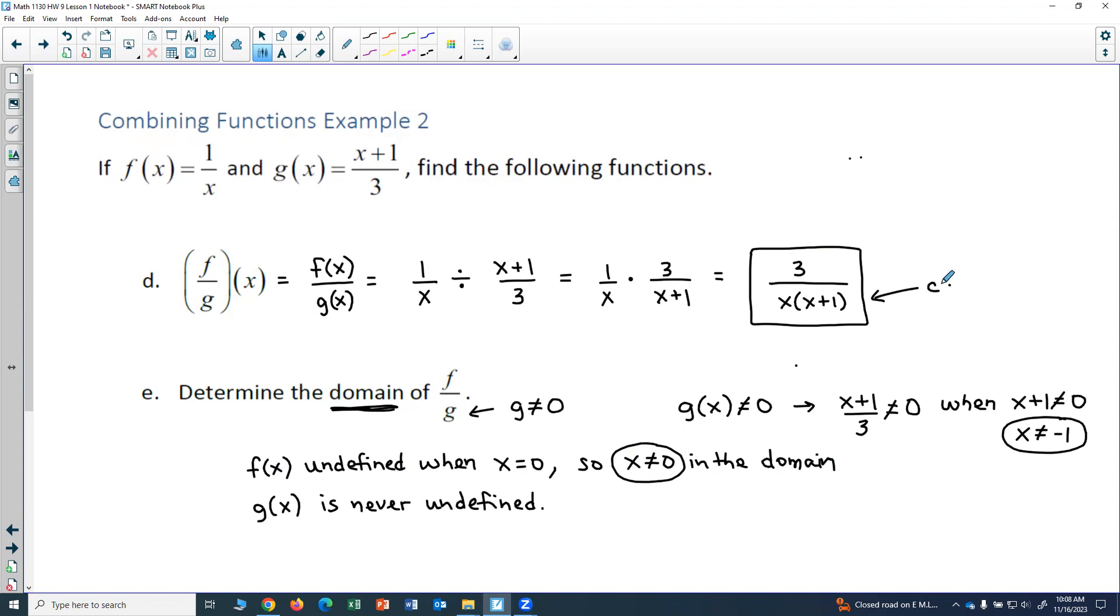I cannot divide by 0. So that would give me x cannot equal 0 and x cannot equal negative 1, which is actually the same restrictions I got down here. But I do have to check just in case I ended up with something extra from looking at my result.